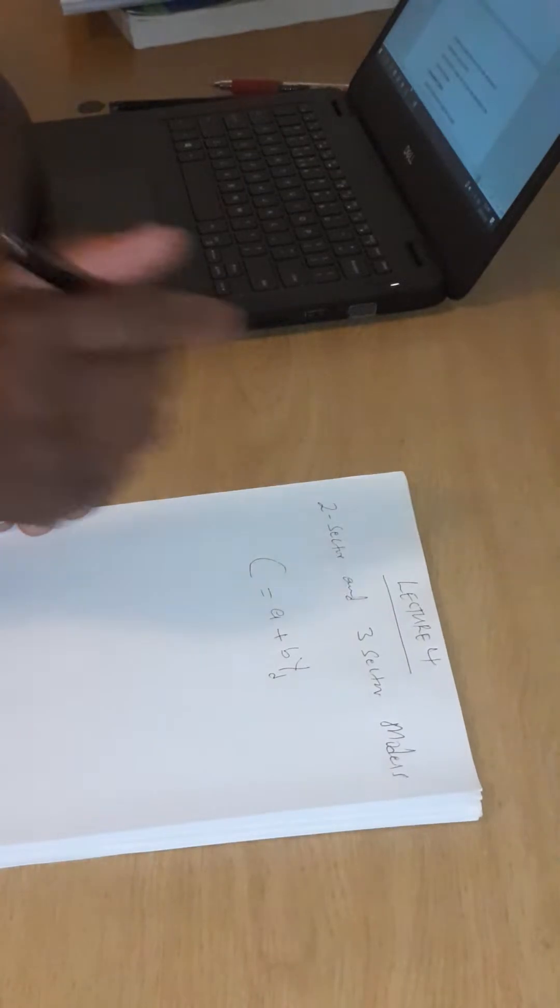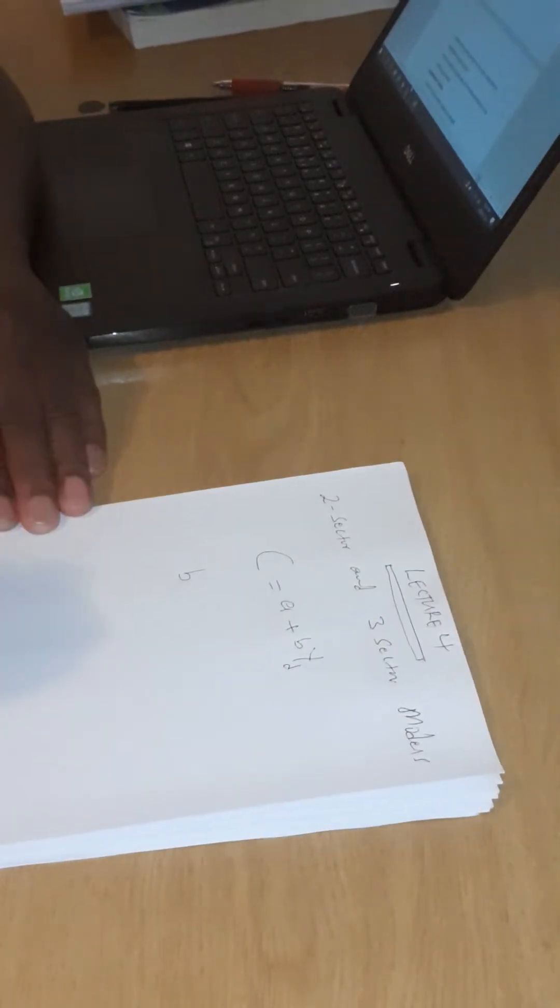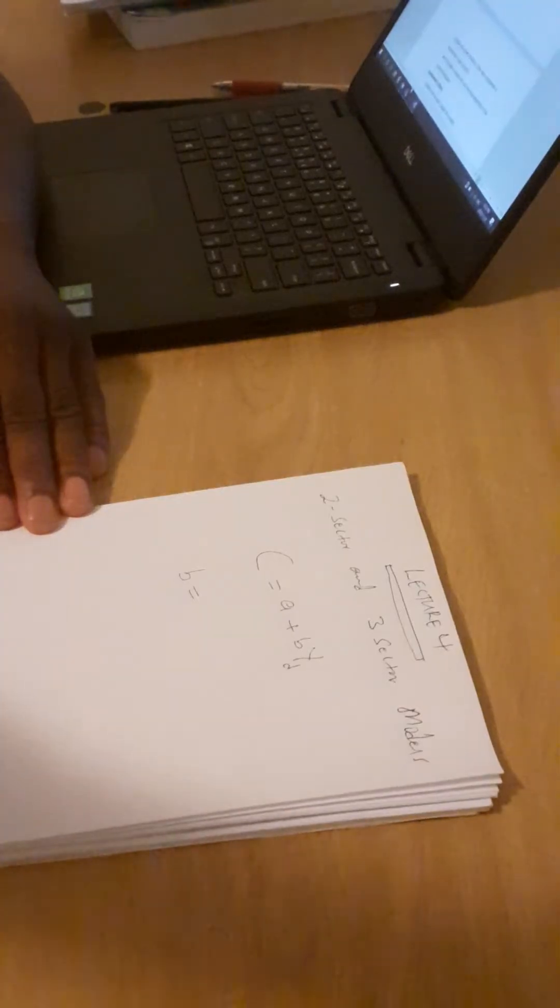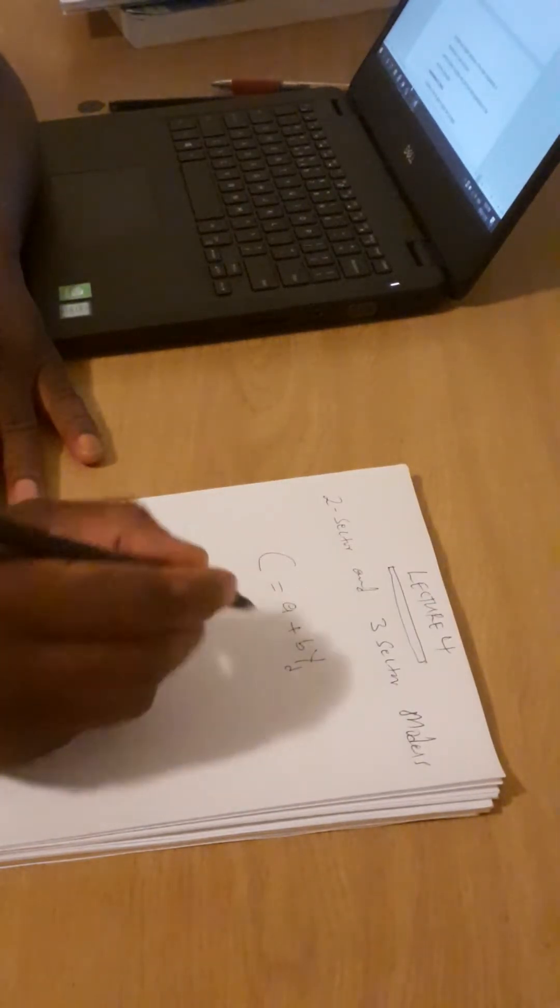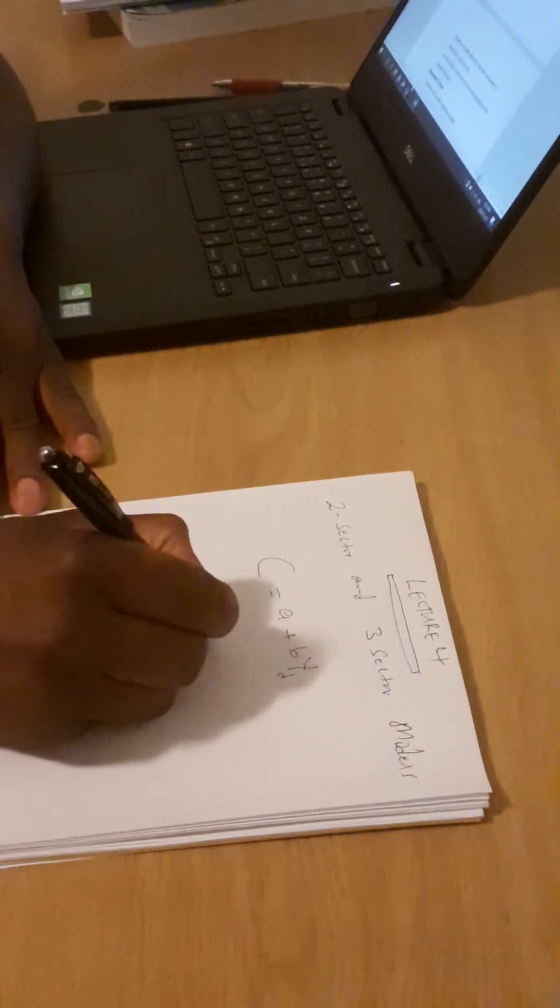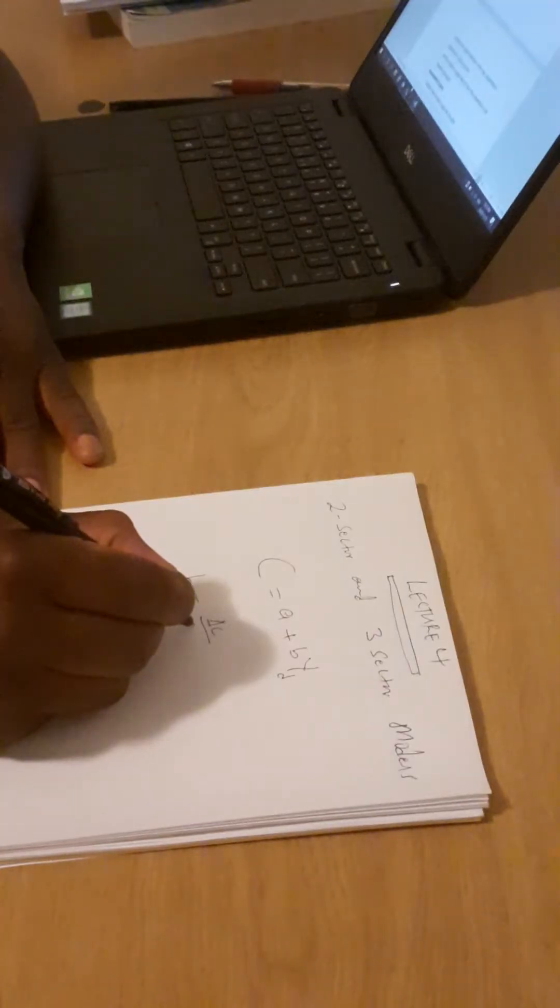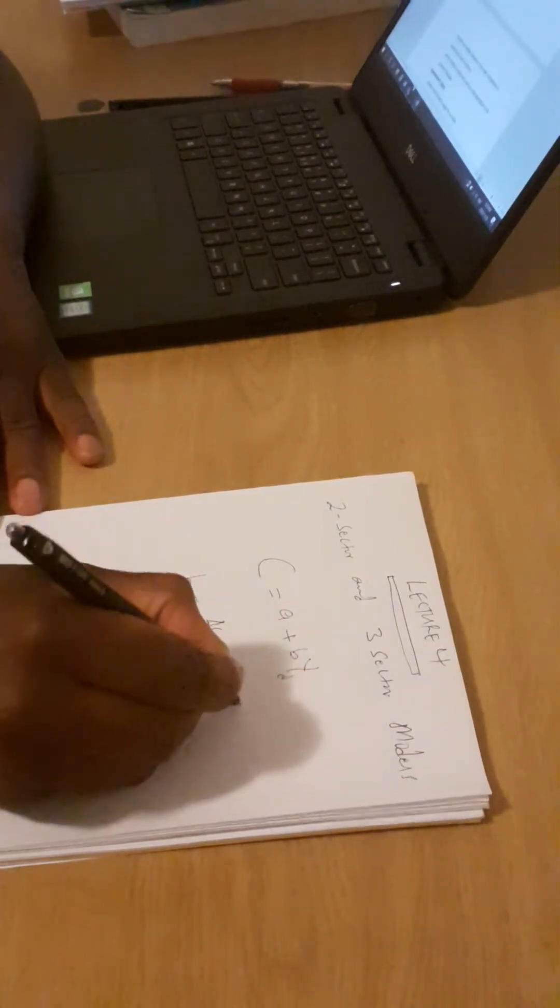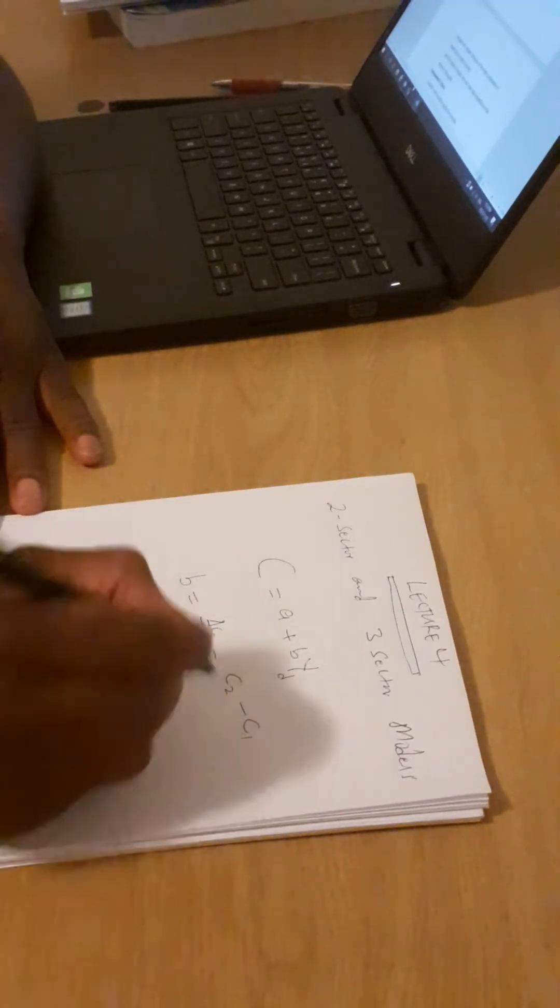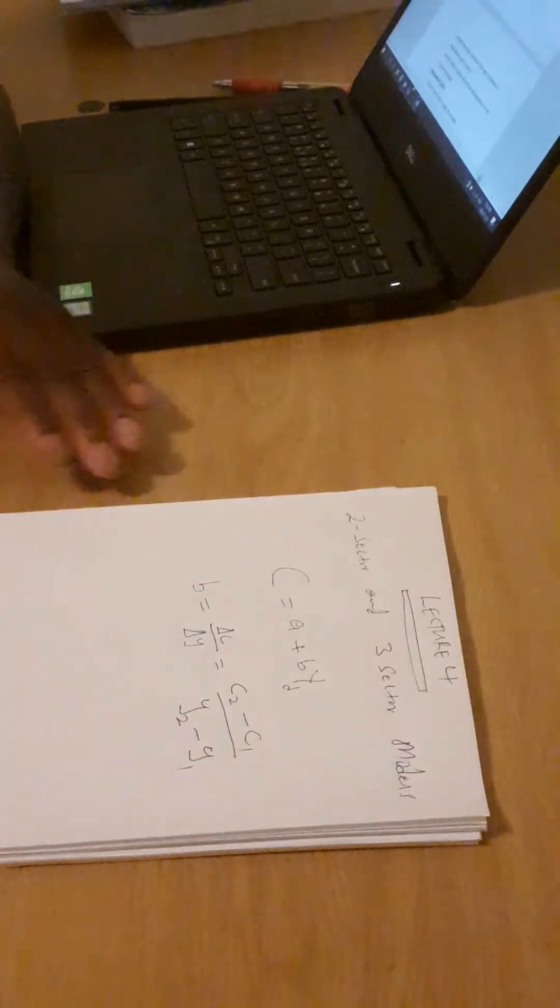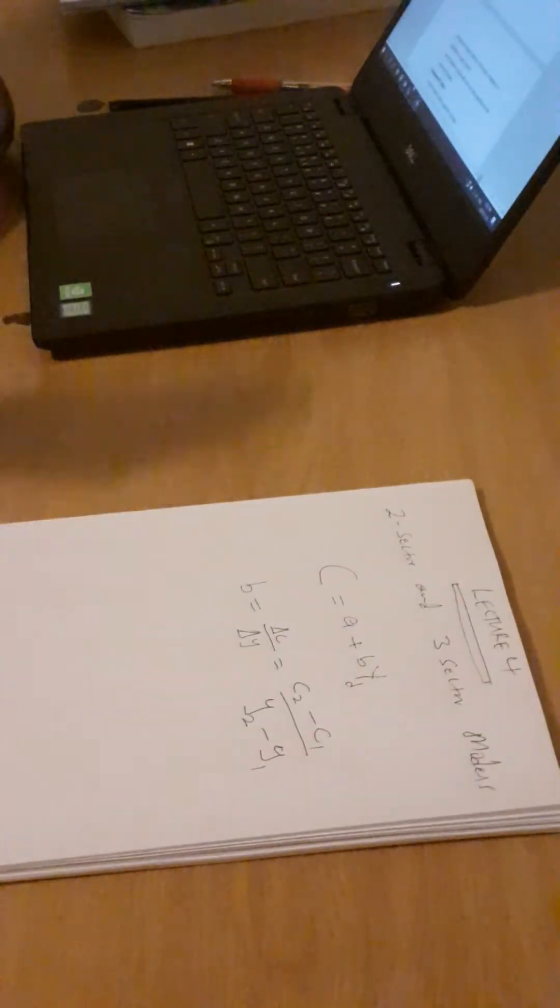Now, I want you to look at this equation very carefully. On this equation, B, which is the slope, is equal to change in C divided by change in Y. Which means it is C2 minus C1, that's consumption, final consumption minus initial consumption, divided by final income minus initial income. That is just the slope, the way to compute the slope.